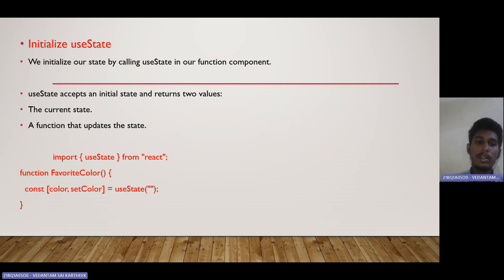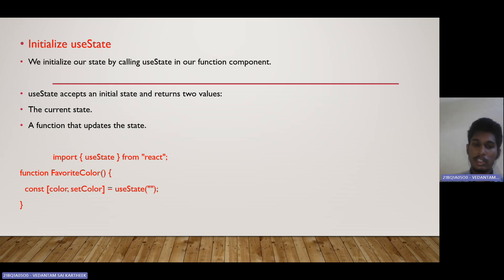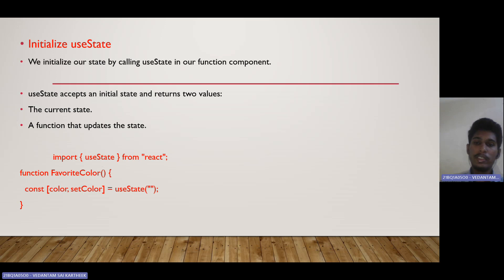After importing, we need to initialize the useState hook. It is initialized by calling the useState function in our functional component. useState accepts an initial value and returns two values: the current state, and the function that updates the state.